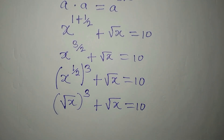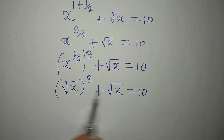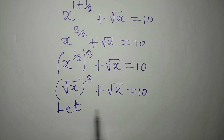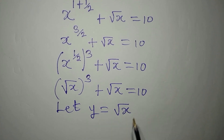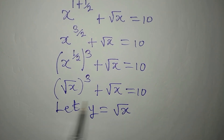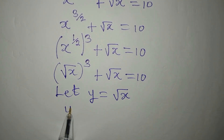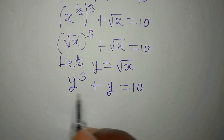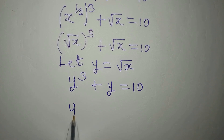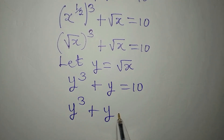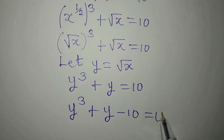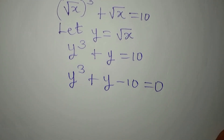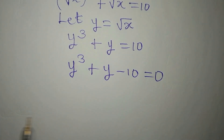So we now let y be equal to square root of x, so that anywhere we find square root of x we write y. We now have y to the power of 3 plus y equals 10. Bringing everything to the left, we have y cubed plus y minus 10 equals 0.